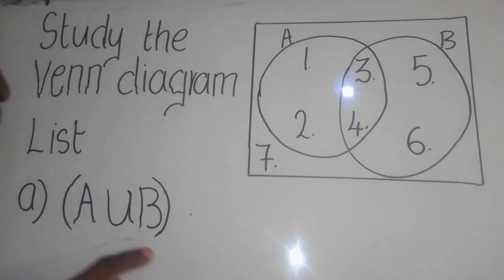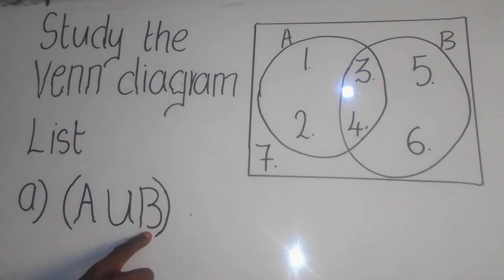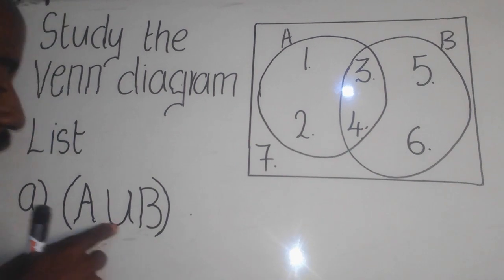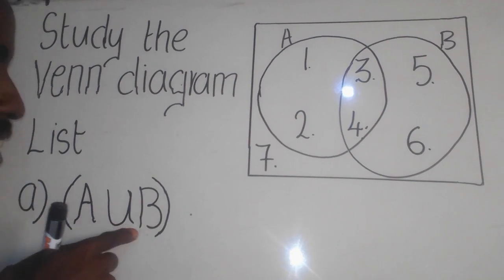You need to understand that the question is saying A union B. Union simply means everything, meaning all together. Which everything exactly here? Things which are found in set A and in set B, okay?